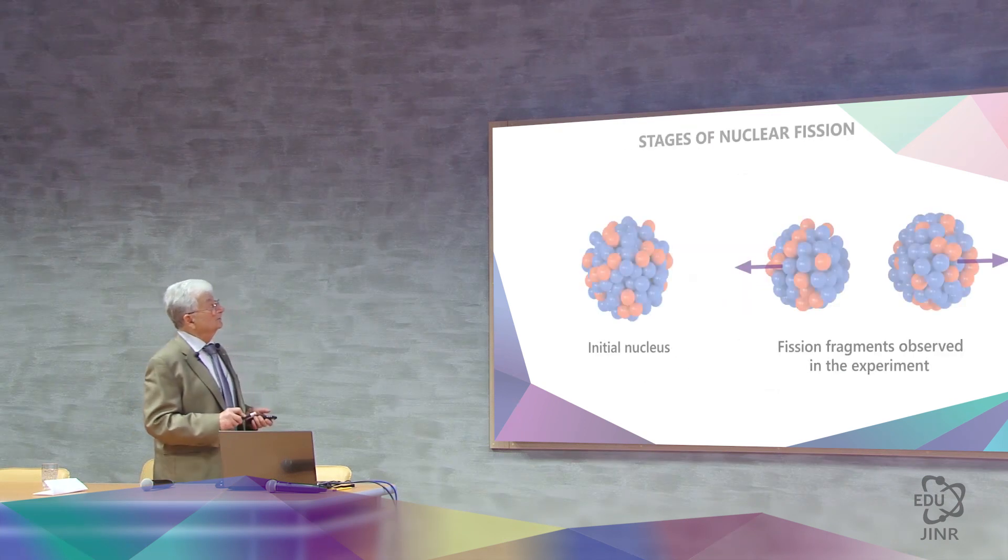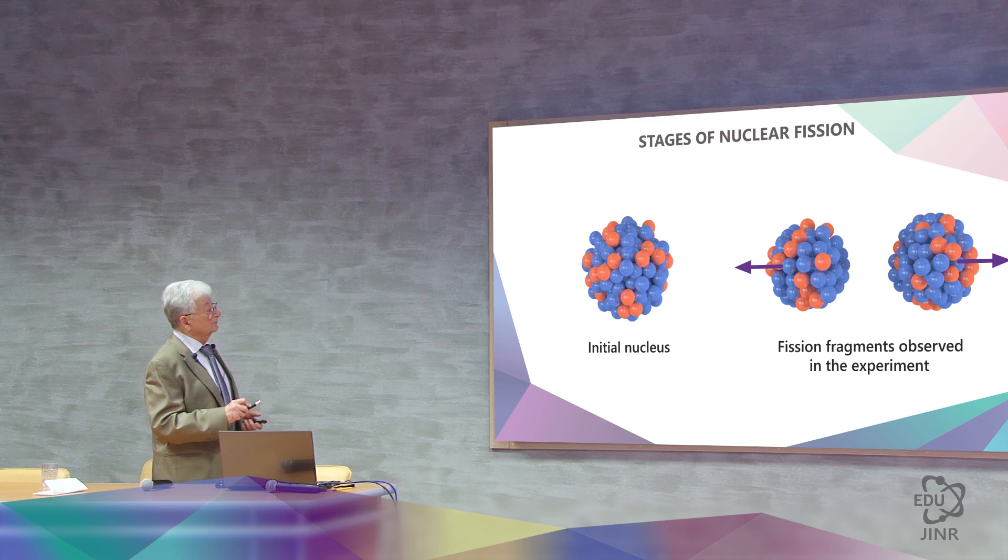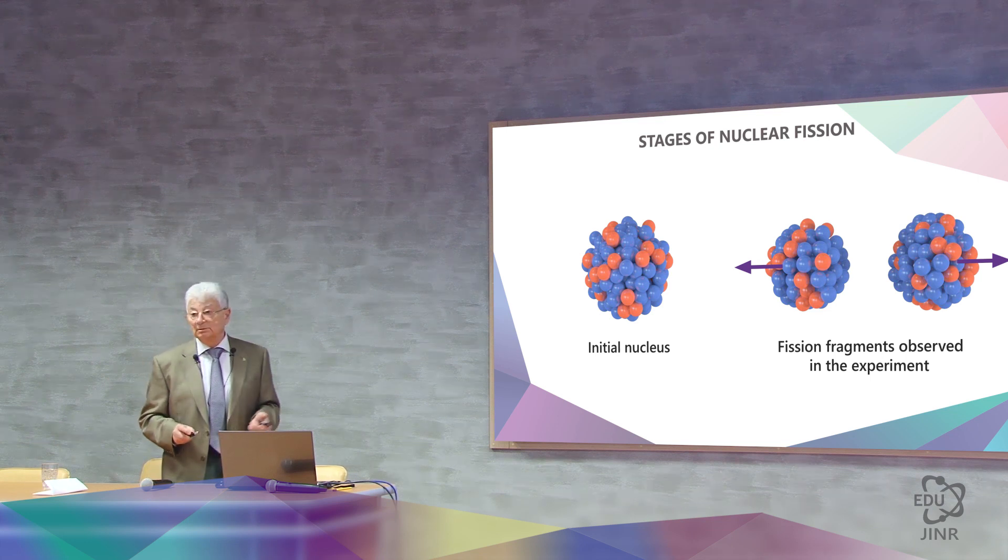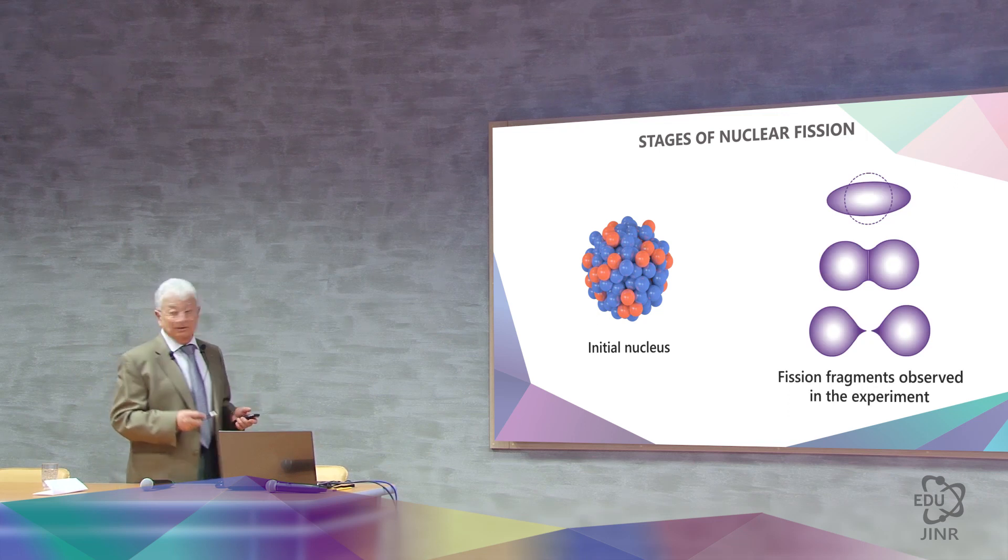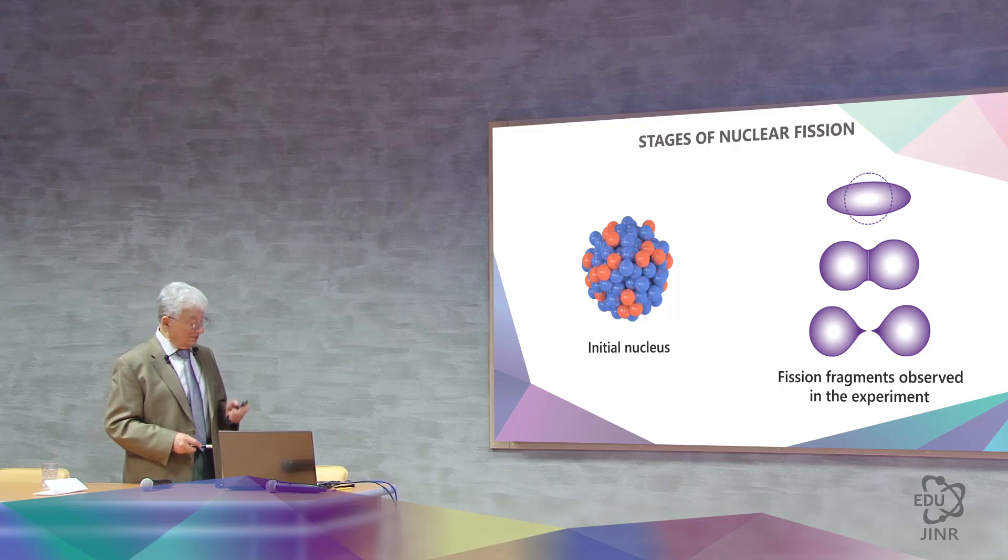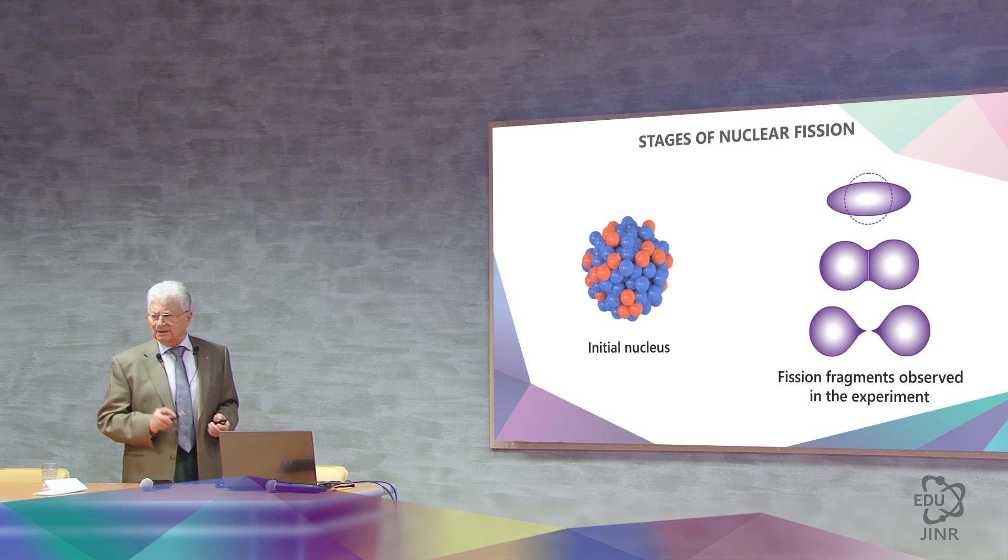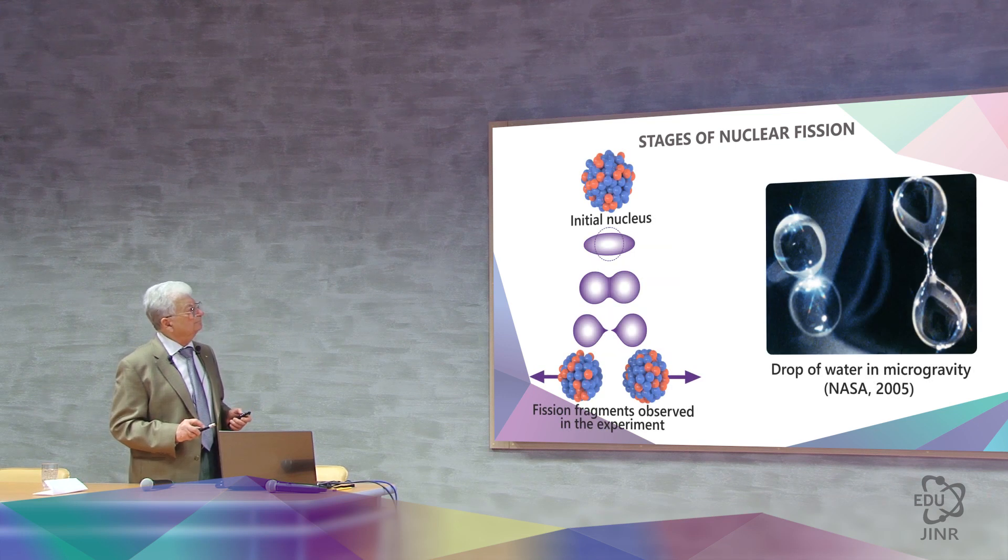But what do we see in the actual experiment? First, we see a spherical nucleus, and then we see two fragments. This depiction is derived from the drip fission model. Until recently, these were merely images. Until in 2005,